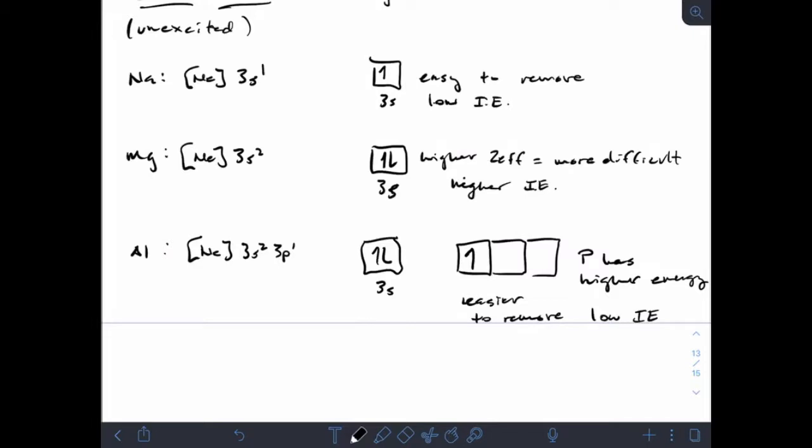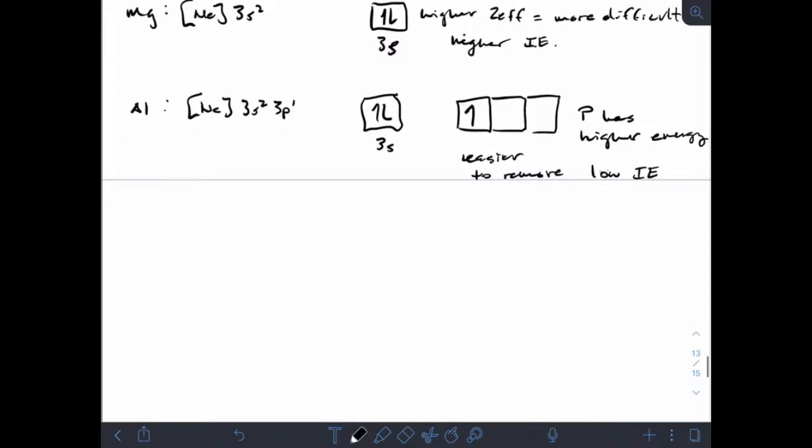Let's continue to look at our trend here. So silicon, [Ne] 3s² 3p². Higher Z effective, higher ionization energy. It gets a little tougher to pull that extra electron off. And just pulling one electron off doesn't really benefit the atom energetically, so higher Z effective, it's going to hold on to that extra electron a little bit more.